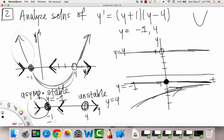And then in between, when we're from negative 1 to 4, then we have it going away from the 4 value, but towards the negative 1 value, because that's what that arrow means.